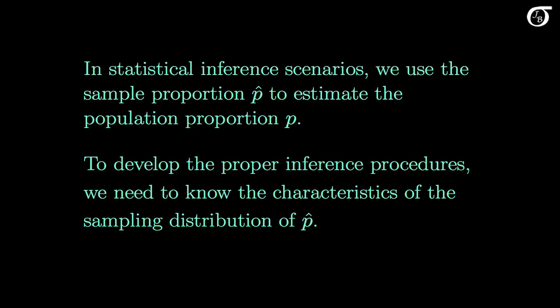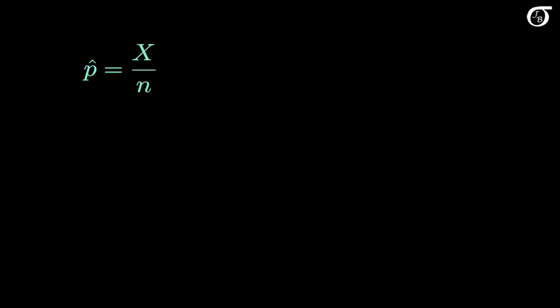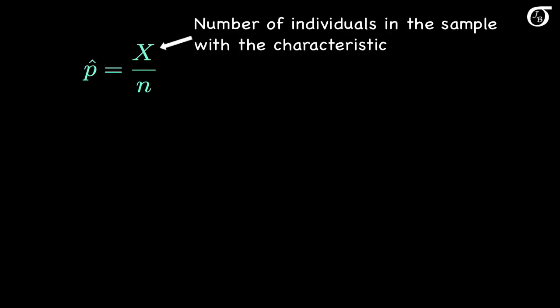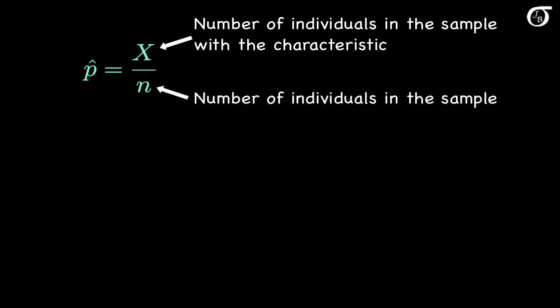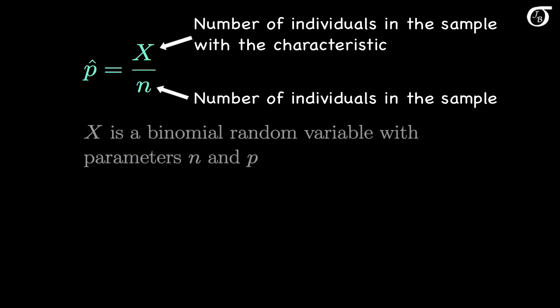I'm going to assume in this video that we are sampling from an infinite population, or that we are sampling only a small fraction of a large population — that is typically the case in practice. We can view the sample proportion P-hat as x over n, where x is a random variable representing the number of individuals in the sample with the characteristic of interest, and n is the total number of individuals in the sample. In many cases, x can be thought of as a binomial random variable with parameters n and p, so the sampling distribution of P-hat is based on the binomial distribution.